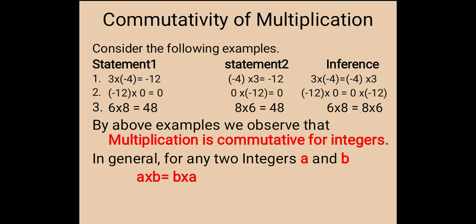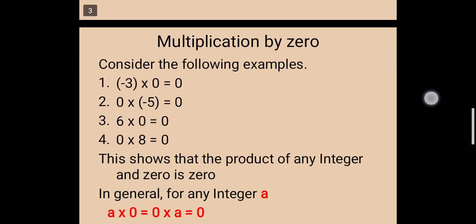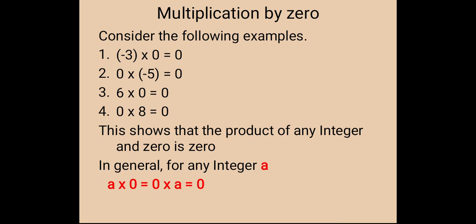The next property is multiplication by zero. Consider the following examples. First: minus 3 into 0 is equal to 0. Second: 0 into minus 5 is equal to 0. Third: 6 into 0 is equal to 0. Fourth: 0 into 8 is equal to 0. This shows that the product of any integer and 0 is 0. In general, for any integer a, a into 0 is equal to 0 into a is equal to 0.